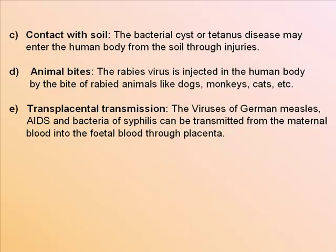Contact with soil: bacterial cysts or tetanus disease may enter the human body from soil through injuries. Animal bites: the rabies virus is injected into the human body by the bite of rabid animals like dogs, monkeys, and cats. Transplacental transmission: the virus of German measles, AIDS, and bacteria of syphilis can be transmitted from maternal blood into fetal blood through the placenta.